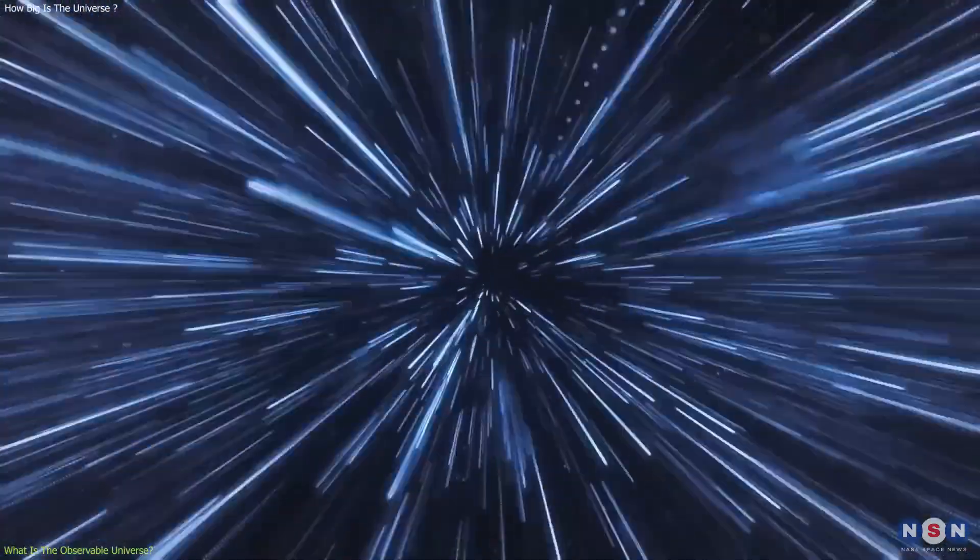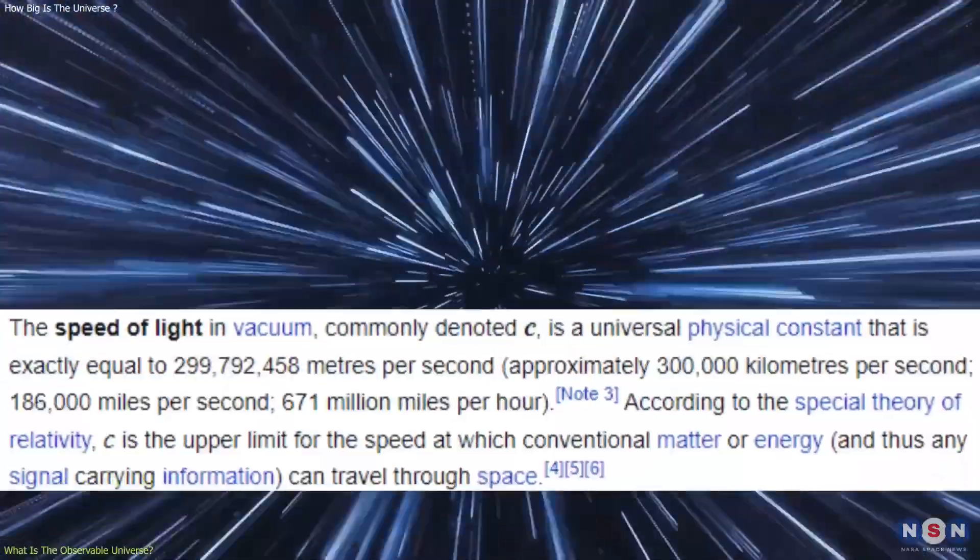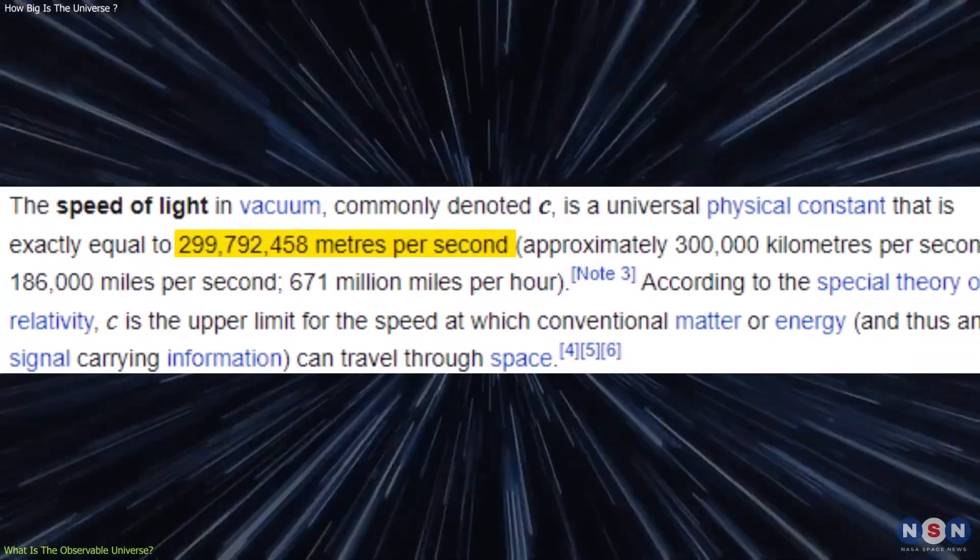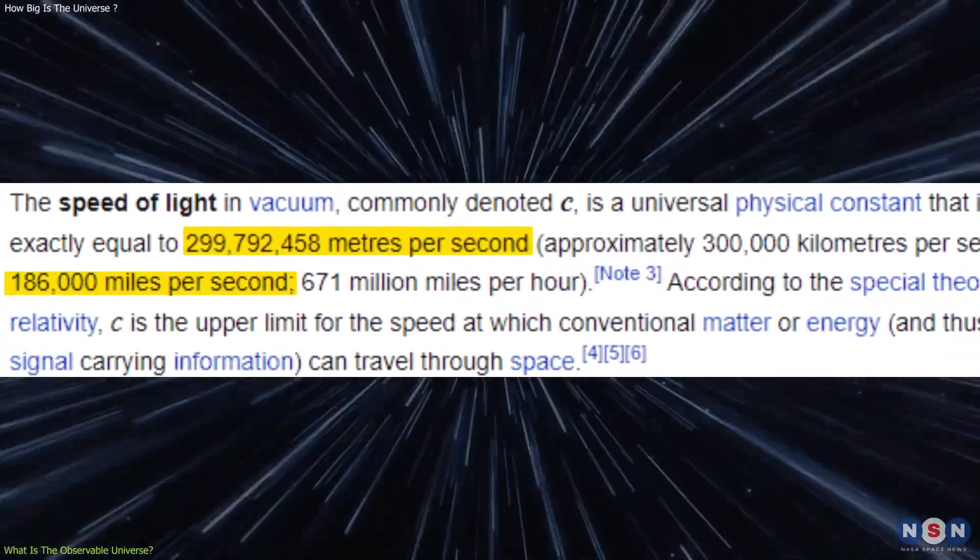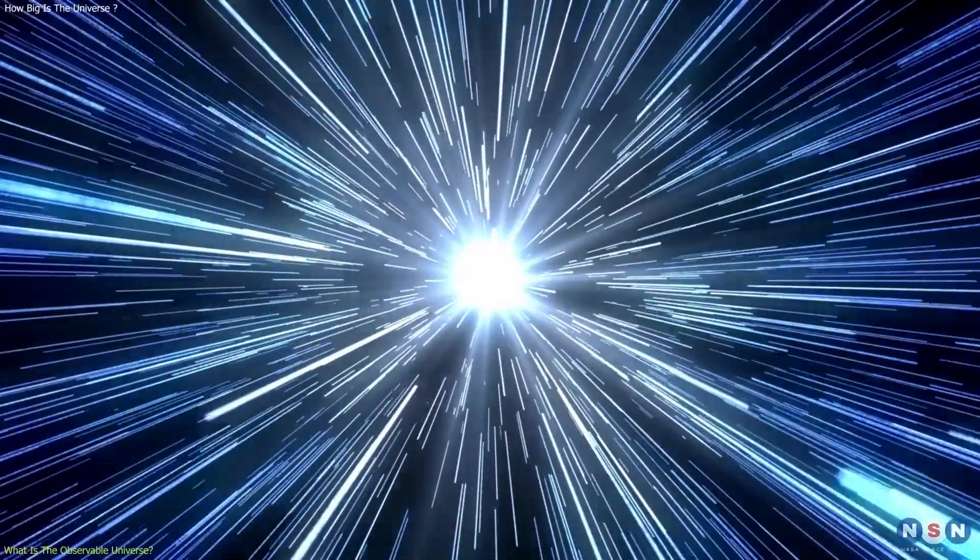You see, light travels at a finite speed, which is about 300,000 km per second, or 186,000 miles per second. That means that it takes time for light to travel from one place to another.